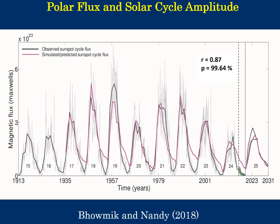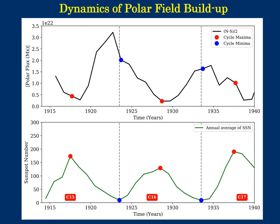Accurate constraints on the polar field strength and the total flux content in the polar cap during a cycle minima is also critical to accurate predictions of the solar cycle, as indicated in this century-scale simulation and prediction of solar activity by Bhowmik and Nandy.